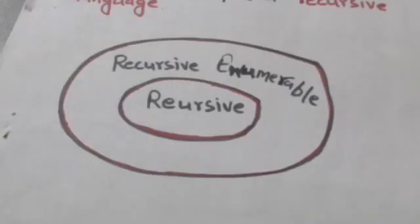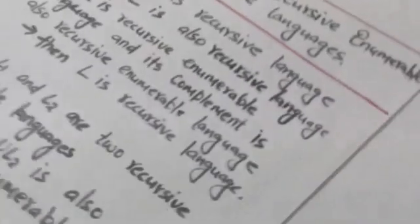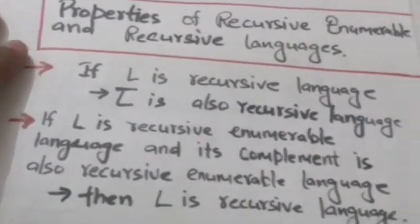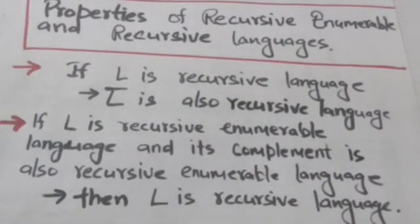All recursive languages are recursive enumerable, but all recursive enumerable languages are not recursive. Now we will study about the properties of recursive and recursive enumerable languages.